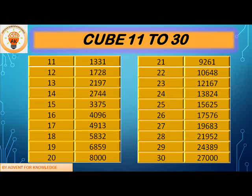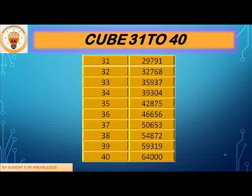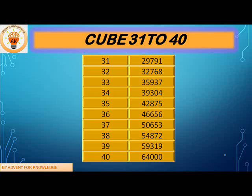Now let's read cubes from number 31 to 40. 31 cube is 29791, 32 cube is 32768, 33 cube is 35937, 34 cube is 39304, 35 cube is 42875, 36 cube is 46656, 37 cube is 50653, 38 cube is 54872, 39 cube is 59319, 40 cube is 64000.